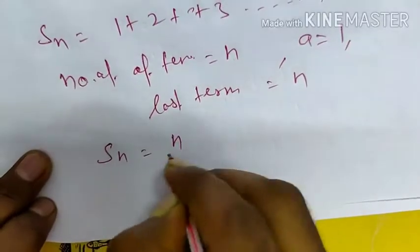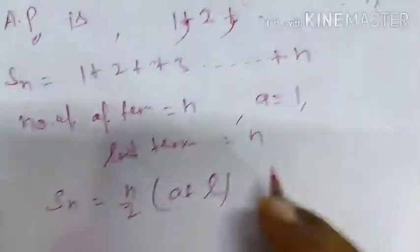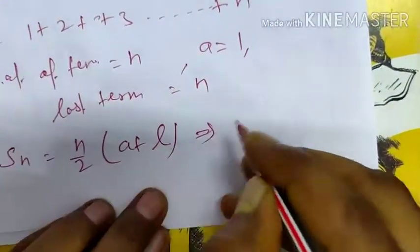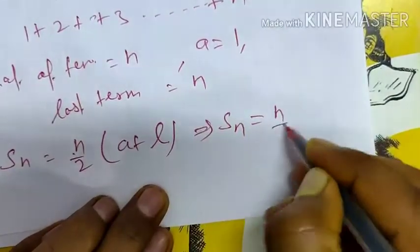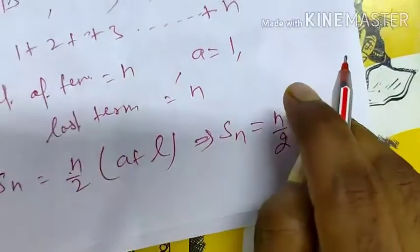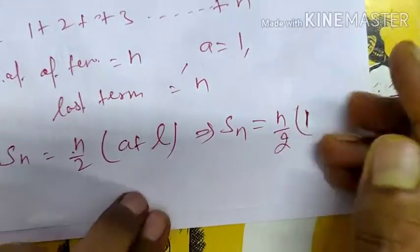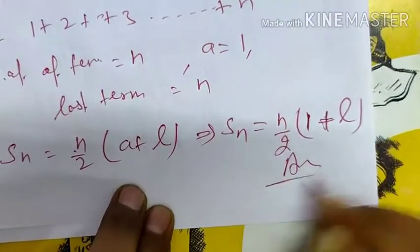So Sn = n/2(a + l). You can use this formula. Sn equals n, the number of terms, divided by 2, times a which equals 1 for positive integers, plus the last term l. This is your final result.